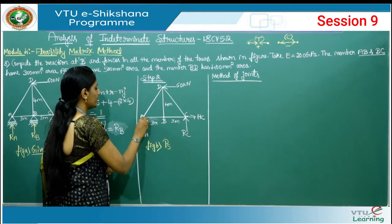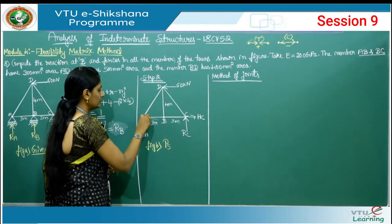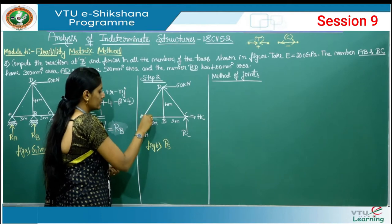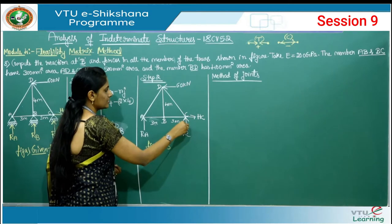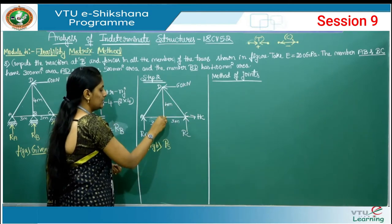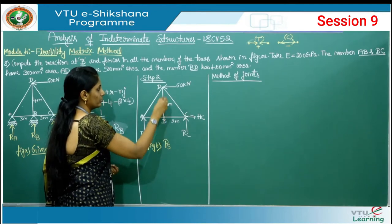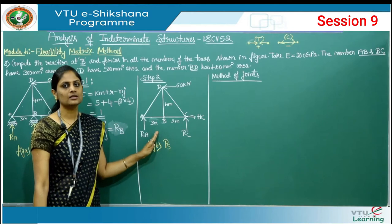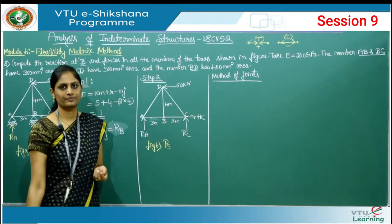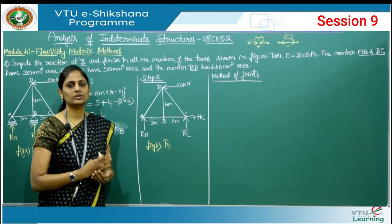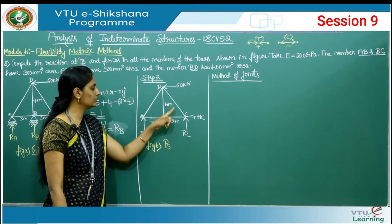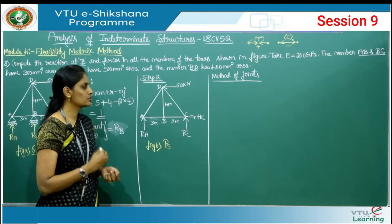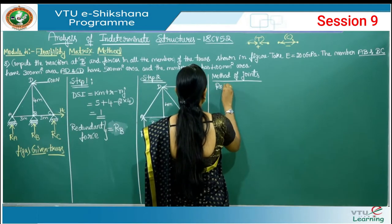Looking at the joints: at A, three members meet (RA, AB, AD) — three unknowns. At C: HC, RC, CD, CB — four forces. At B: BA, BC, BD — three unknowns. At D: four forces. Since all joints have more than two unknown member forces, we need to find the reactions first before proceeding with method of joints.